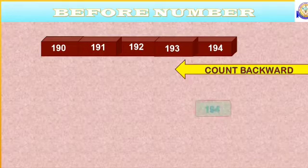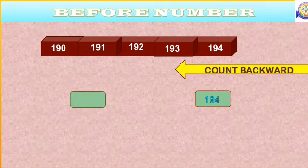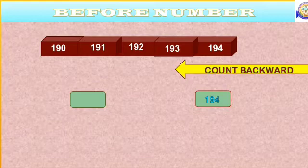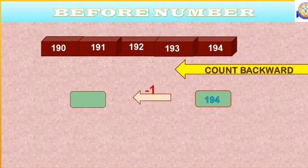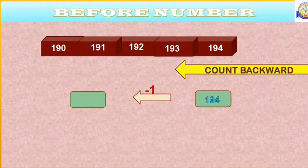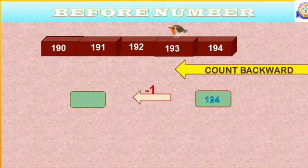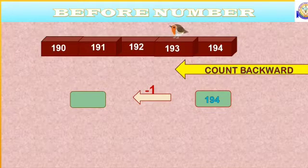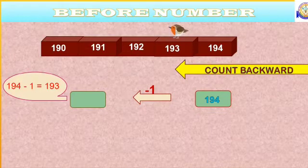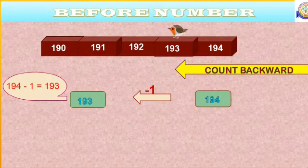Here is the first number that is 194. What comes before 194? To get before number, you should subtract one from 194. 194 minus 1 equal to 193. Before number also known as predecessor.